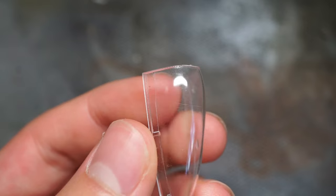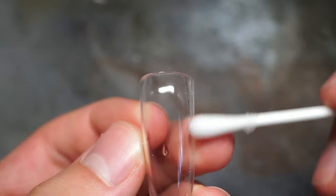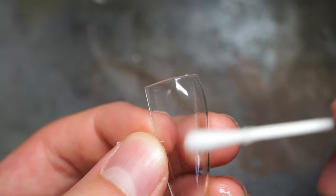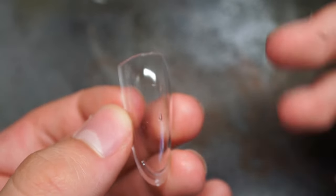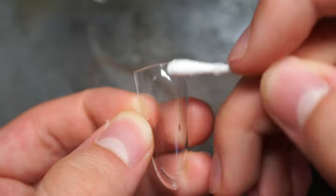Before we get into any techniques it's important to remove any grease from the canopy parts using either IPA or soapy water and a cotton bud. Avoid using paper towels as these can make small scratches in the plastic. Once your canopy is all cleaned up we can get to work. Time for the three techniques.